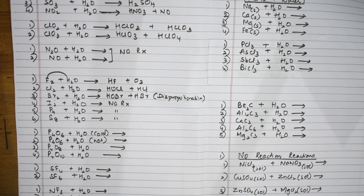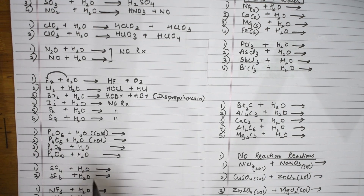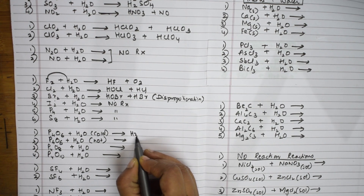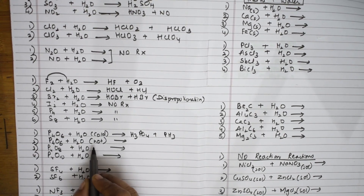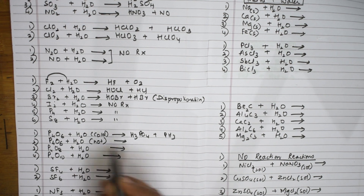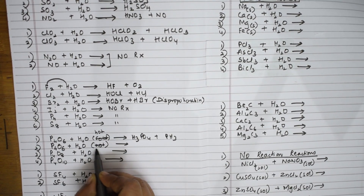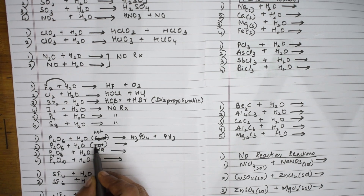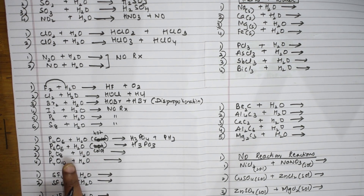When P4O6 combines with water, there are two conditions to remember. Under hot conditions, the products are H3PO4 and phosphine, PH3 — a very important reaction. Under cold conditions, the product is only H3PO3. So hot condition gives H3PO4 plus phosphine, cold condition gives H3PO3.